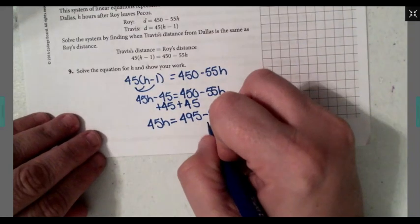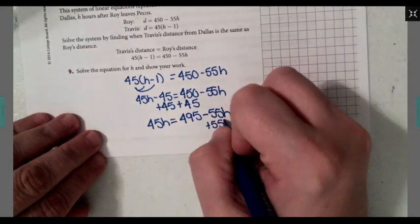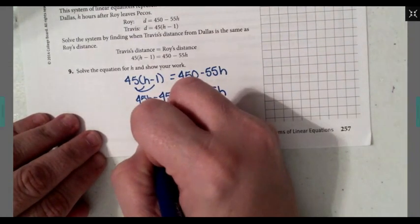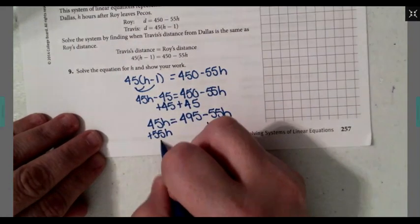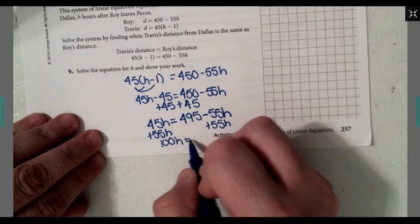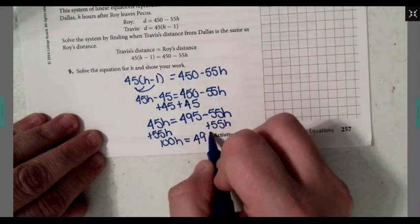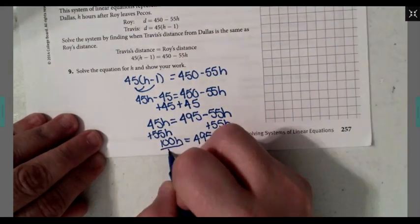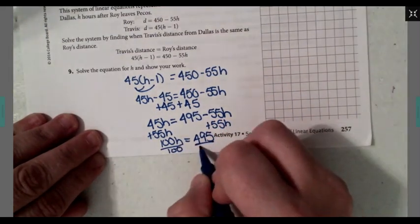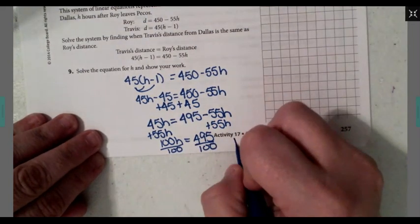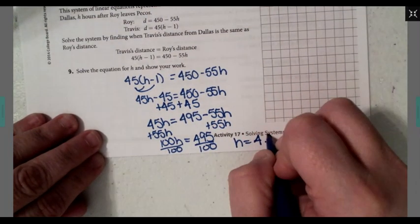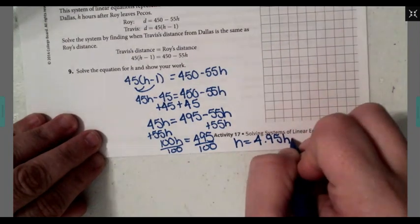It gives me 45h minus 55h. Then we're going to add 55h to both sides. It gives me 100h. So h equals 4.95. Last step would be to divide by 100. So h equals 4.95 hours.